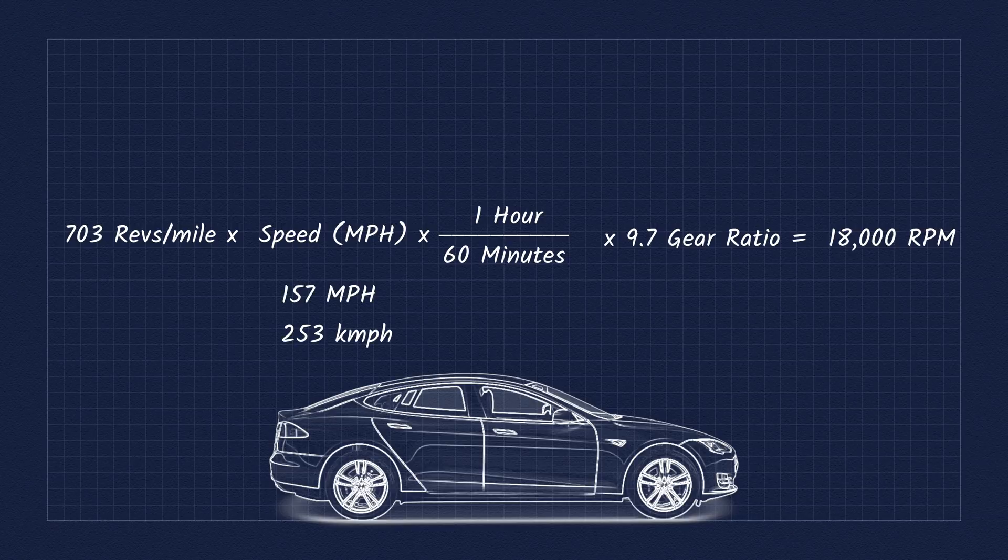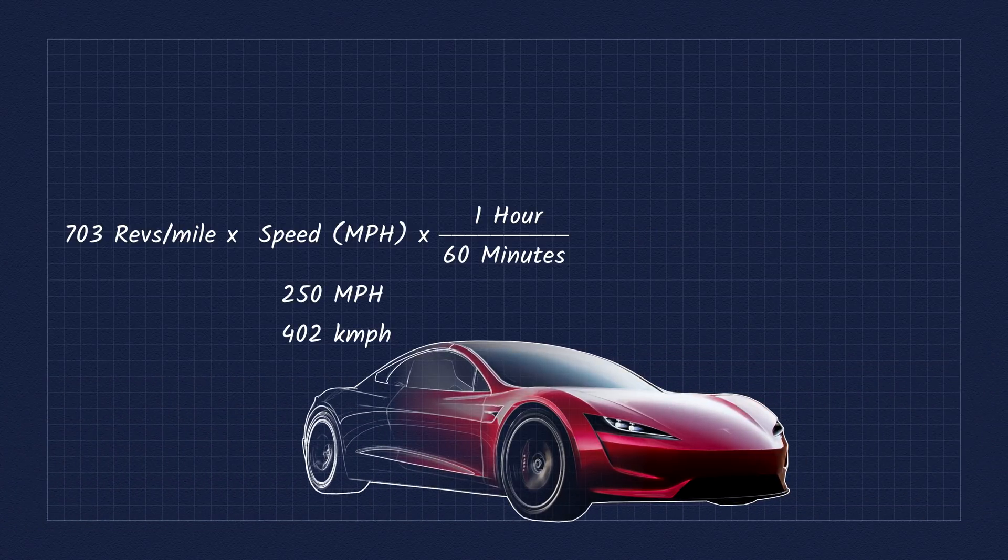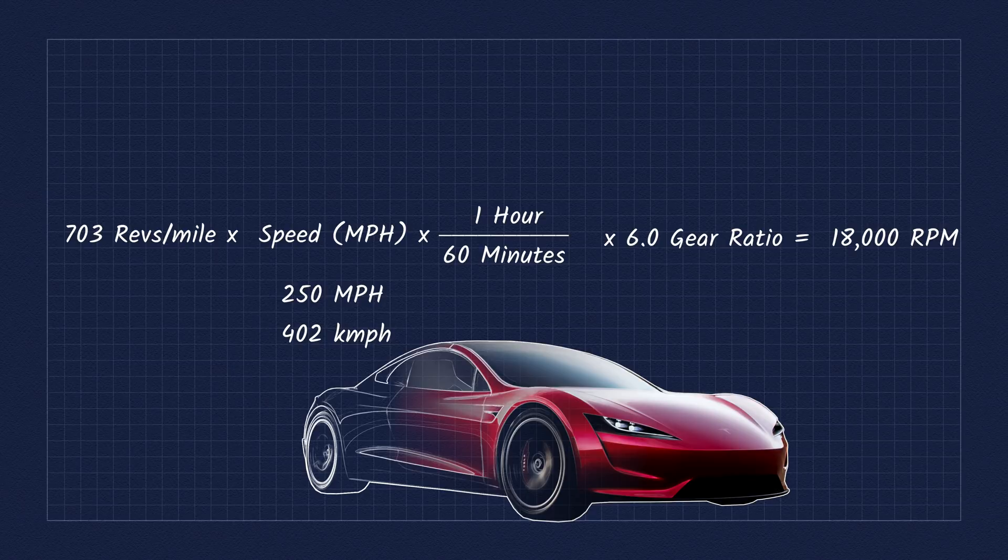For the Roadster to achieve 250 miles per hour, the gear reduction would have to be reduced from 9.6 to around 6.